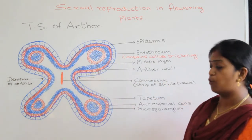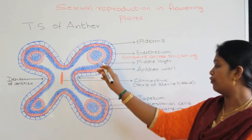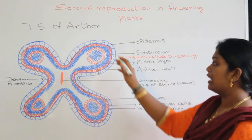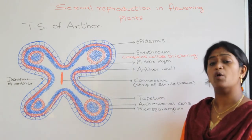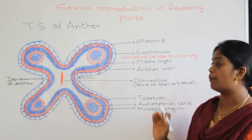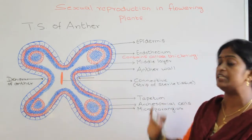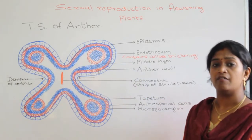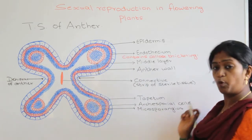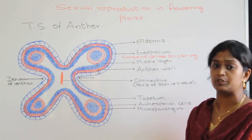Beneath the anther wall we have the pollen sac. The young anther consists of the microsporangium, and the mature anther forms the pollen sac. Inside the microsporangium we have a very important cell layer called the tapetum, which is made up of pyramidal cells containing dense cytoplasm and is multinucleated. Beneath the tapetum we have closely packed spherical cells called archesporial cells, which further develop to give rise to pollen grains.